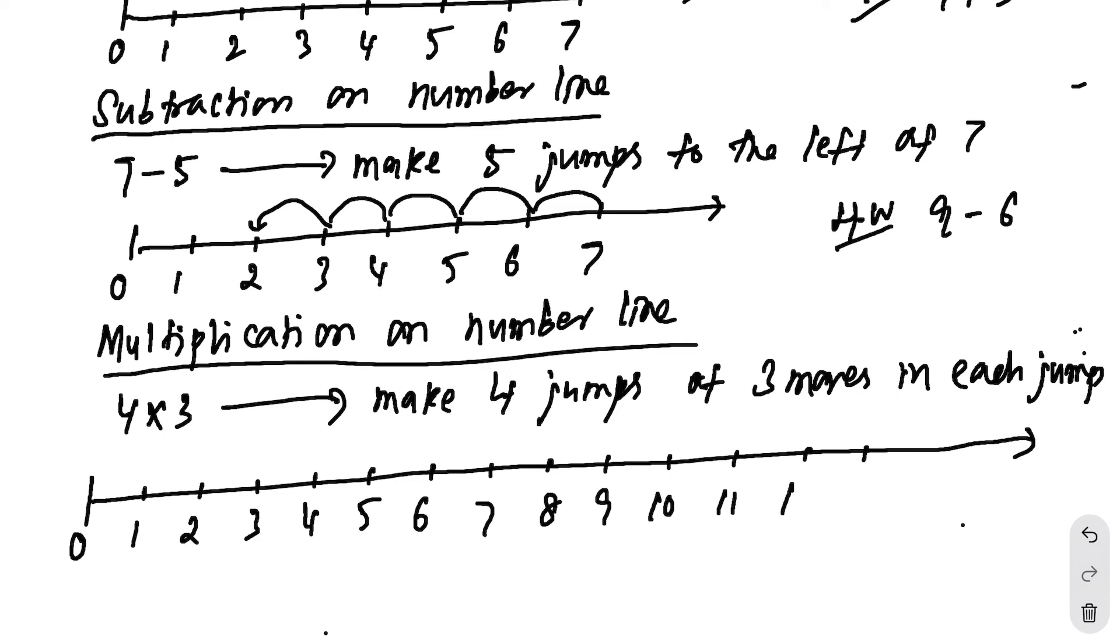So, here for example, we will do 4 times 3. So, you have to jump 3 units 4 times. So, we will start from 0. So, it will be from 0, 1, 2, 3 and 2 times 3 will be from 3, 4, 5, 6, 3 times will be, you have to jump to the right, 7, 8, 9 and 4 times 3 will be, you have to jump from 9 for the 4th time, 10, 11, 12. So, 12 will be the answer for 4 times 3.